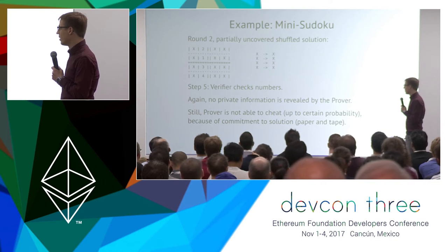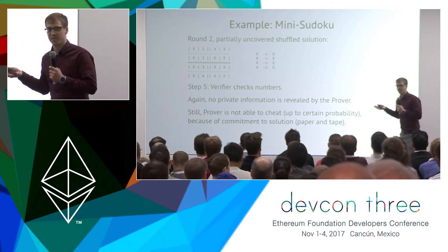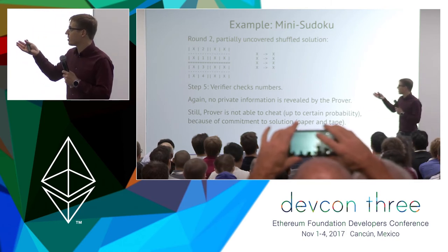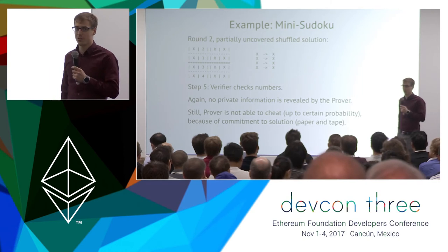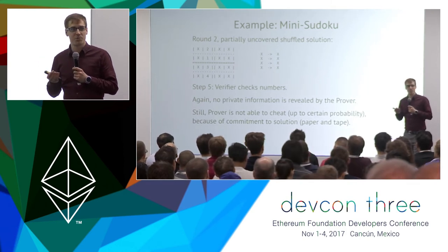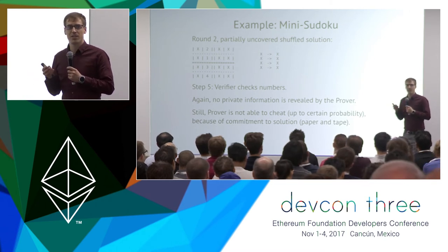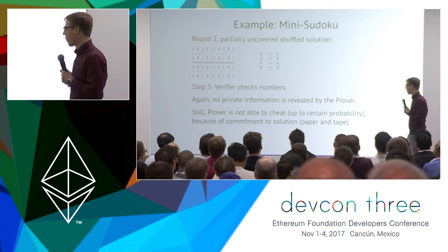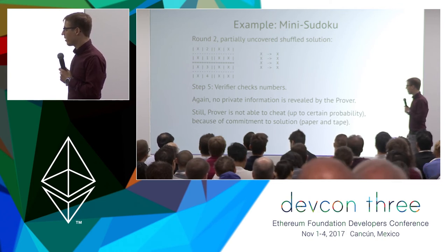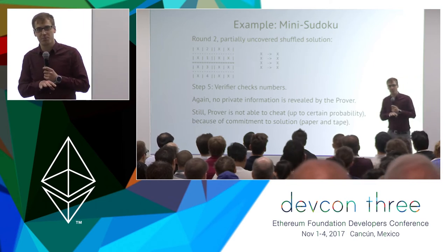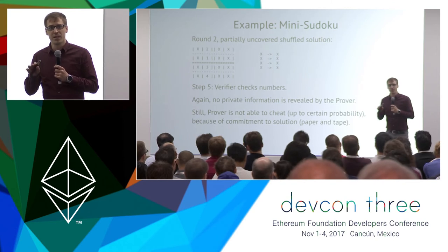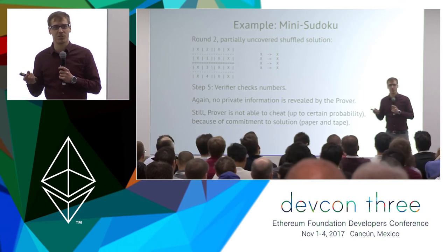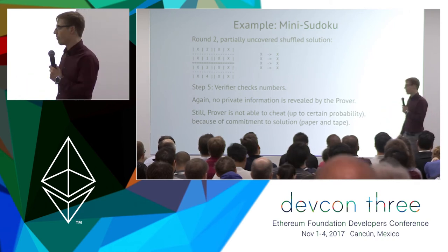If you repeat this multiple times, the prover cannot cheat — or at least it becomes less and less likely. The verifier only checks a certain part of the solution in each round, but there's always a probability she will find an error. The overall chance of success in cheating decreases exponentially with the number of rounds. The key reason this works: the prover writes the numbers on paper and covers them with tape, making it impossible to change numbers after the verifier decides what to see.